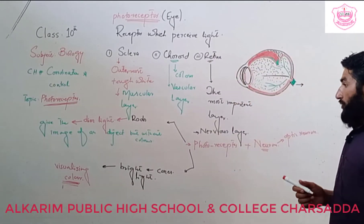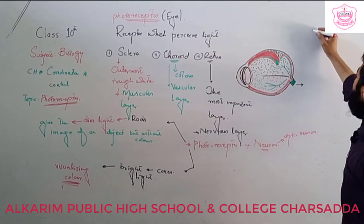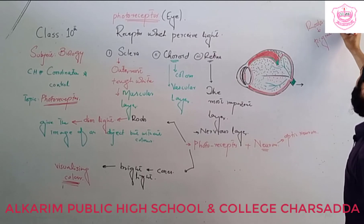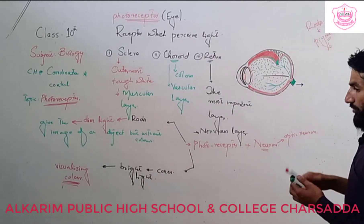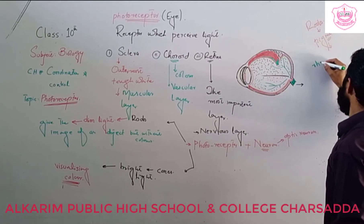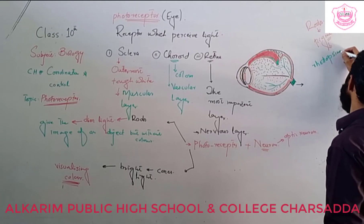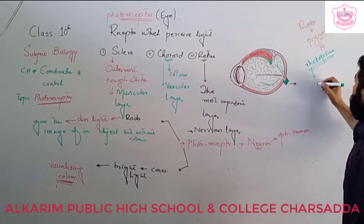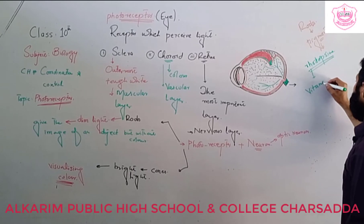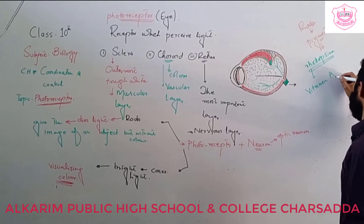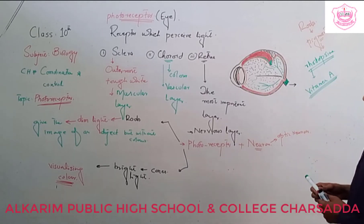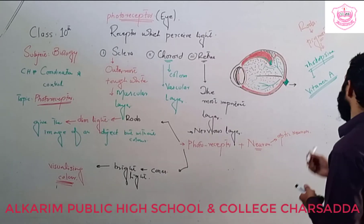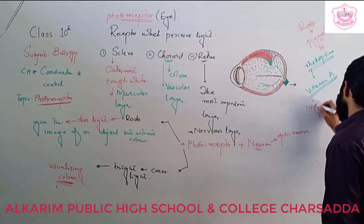Rods contain a pigment that is known as rhodopsin. The body prepares rhodopsin from Vitamin A. If there is a deficiency of Vitamin A in the body, then the body cannot prepare rhodopsin, and that condition leads to night blindness.